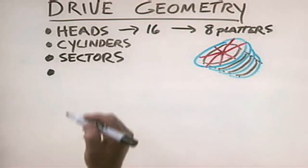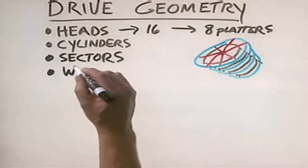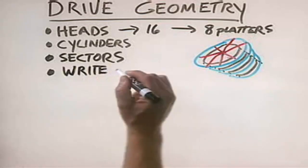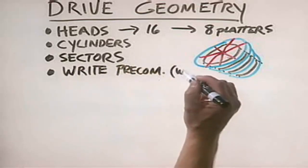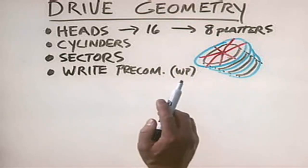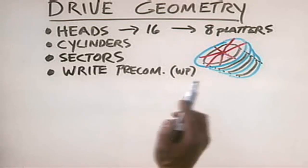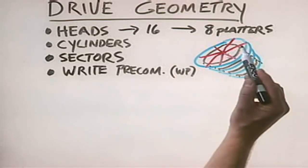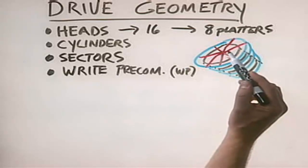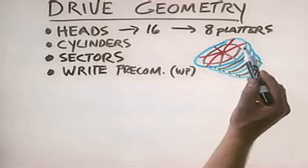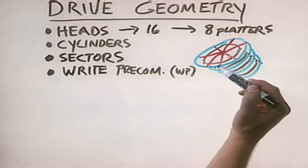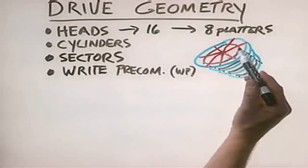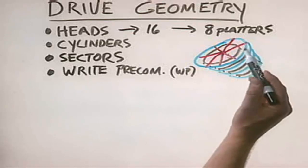Another parameter you might encounter — though probably not much anymore — is write precompensation, usually referred to as WP. This parameter was used in older drives. Looking at the platter diagram, you'll notice that tracks get progressively longer as you go toward the edge. The write precompensation parameter specifies a particular cylinder beyond which the drive controller should start writing data bits farther apart, because the tracks are longer.